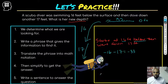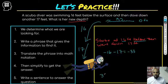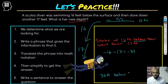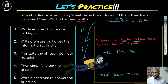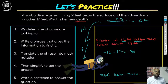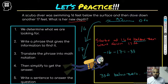Write the sentence to answer the question: her new depth is 33 feet below zero. You could also say negative 33 feet — either one should be acceptable depending on your assessment and what your teacher is looking for.